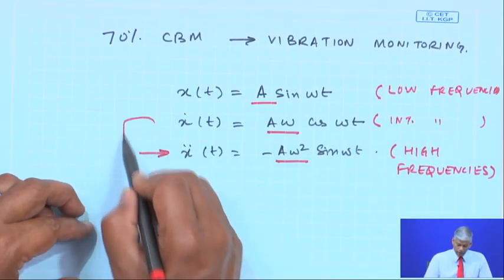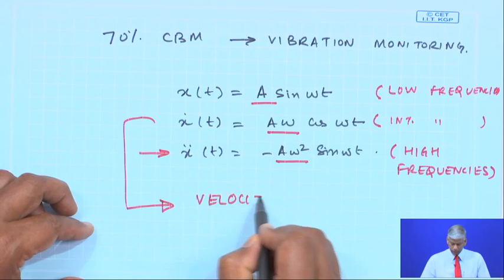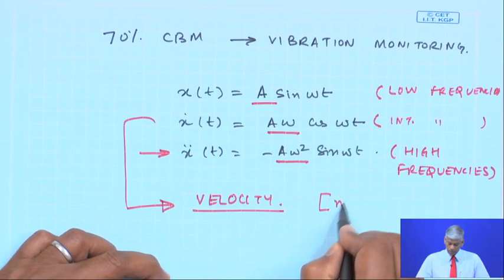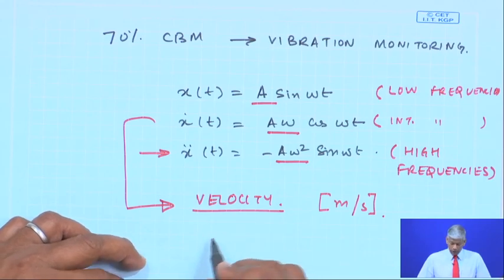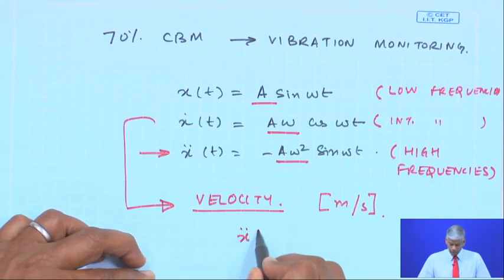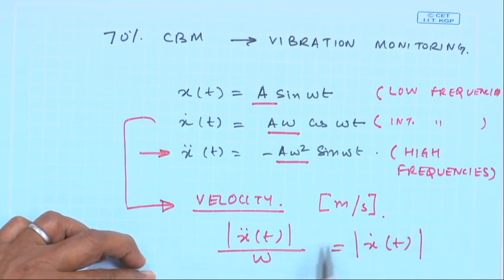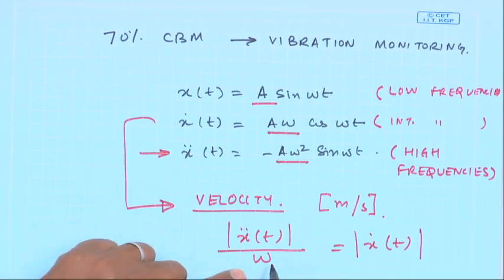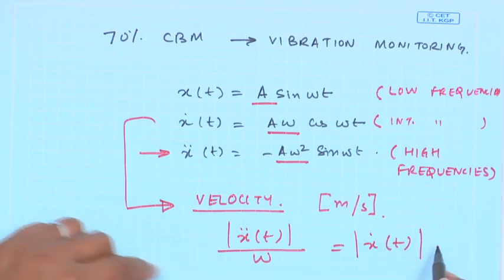At intermediate frequencies we need to measure velocity. Now, there are many standards which use velocity as a parameter, so many measurements have to be reported in velocity. However, if I measure acceleration, dividing it by ω gives the velocity amplitude. So by measuring acceleration and dividing by frequency ω, I can get the velocity amplitude ẋ(t).